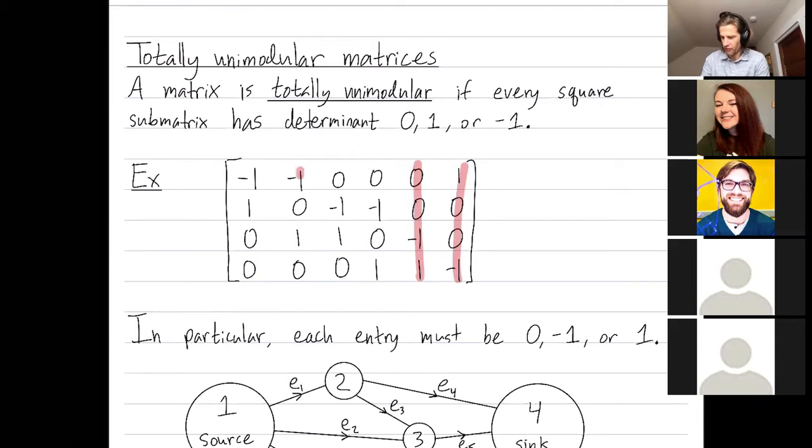I could cut off everything besides this 2x2 matrix. That has to have determinant 0, 1, or negative 1. You can even cut down everything besides a 1x1 square matrix. That has to have determinant 0, 1, or negative 1, which just means that every entry of this matrix has to be 0, 1, or negative 1.